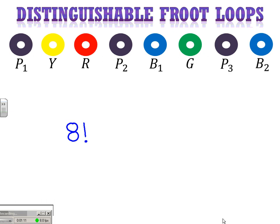And while that is true, some of those arrangements are not distinguishable. For instance, I could just take the purple, assuming that we actually came up with this arrangement, I could just take my second purple fruit loop.